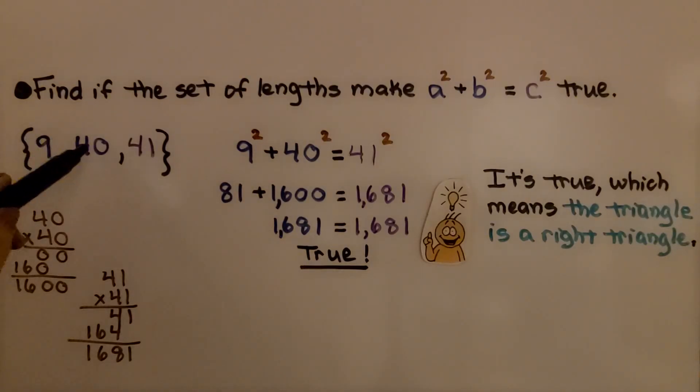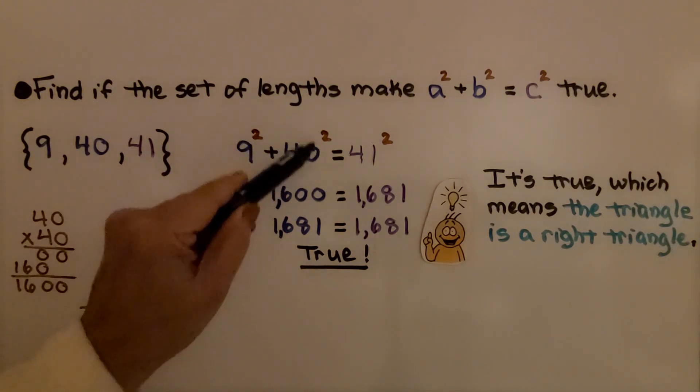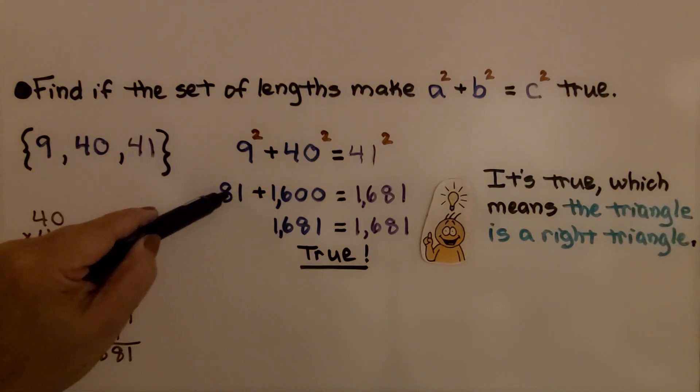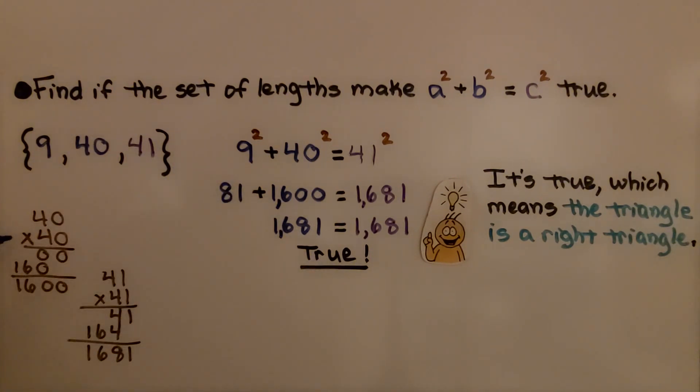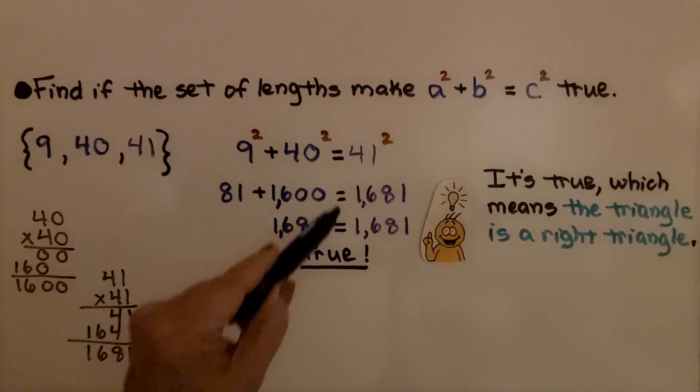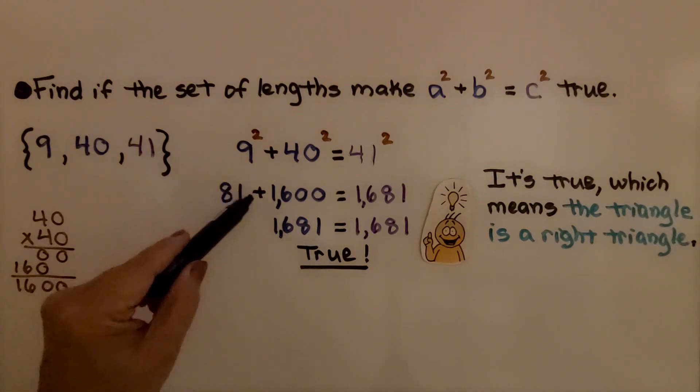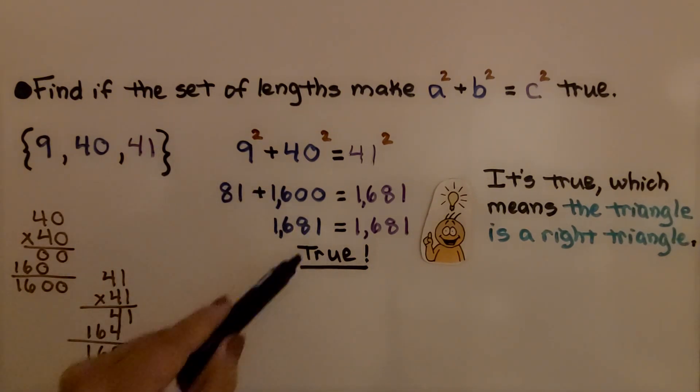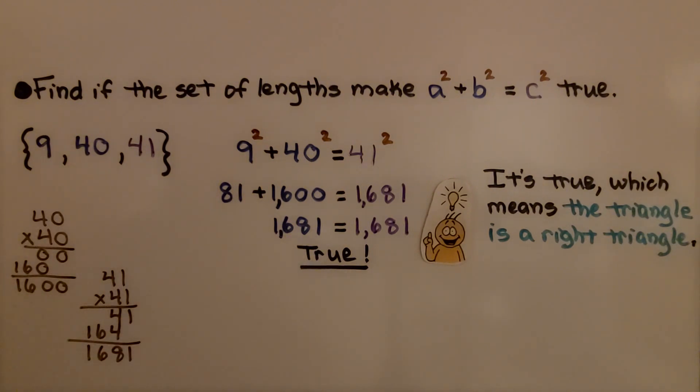Let's try 9, 40, and 41. That means 9 squared plus 40 squared equals 41 squared. 9 times 9 is 81. We can do a little math: 40 times 40 is 1,600, and 41 times 41 is 1,681. Yes, 81 plus 1,600 equals 1,681, which is true, so the triangle is a right triangle.